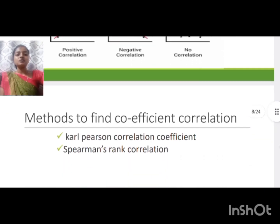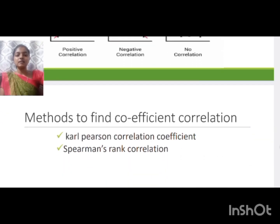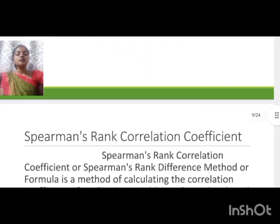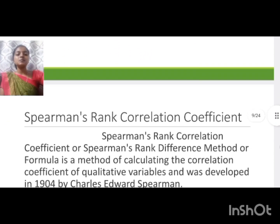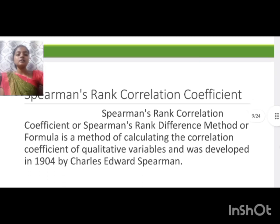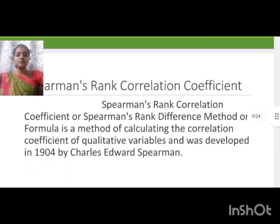There are two methods to find the coefficient of correlations: first is Carl Pearson coefficient of correlations, and second is Spearman rank coefficient of correlations. The Spearman rank correlation coefficient was developed in 1904 by Charles Edward Spearman.